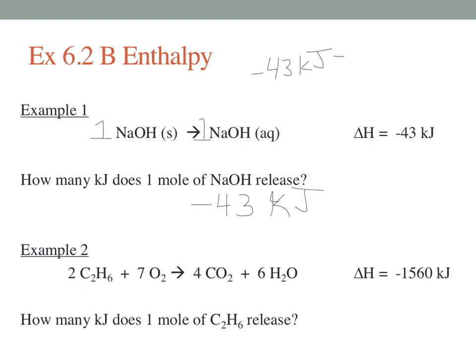That is going to give us a conversion that we can use when we have enthalpies. This is very important. Negative 43 kilojoules would be equal to anything in the balanced equation. In this case, we're talking about sodium hydroxide.